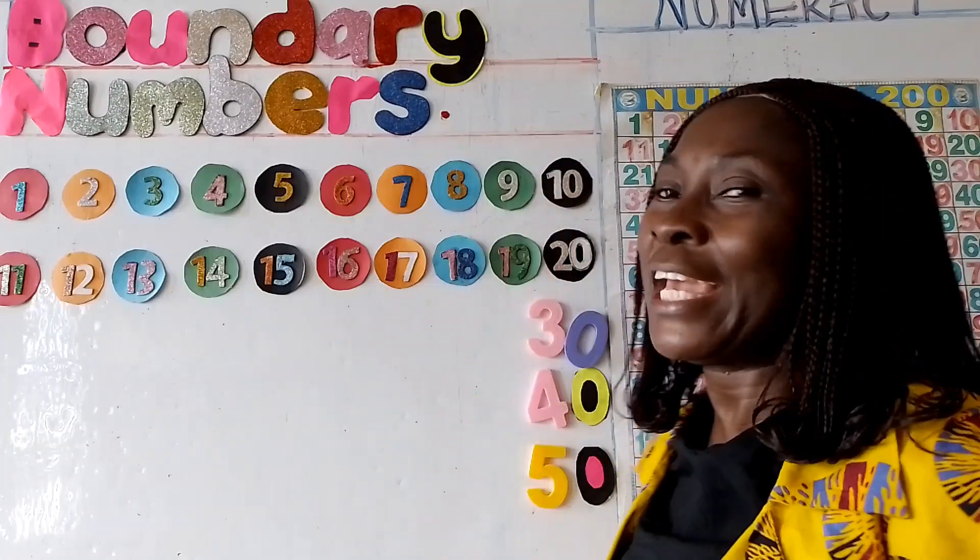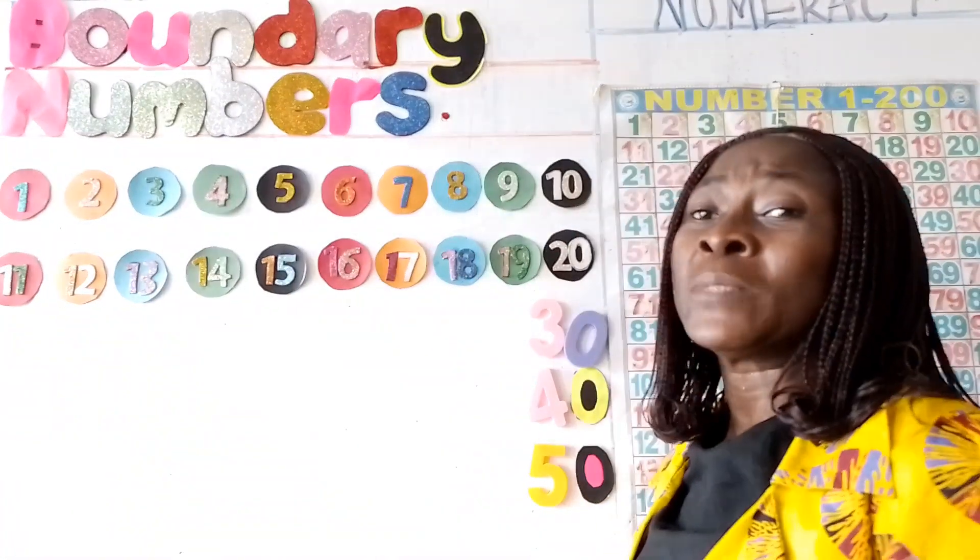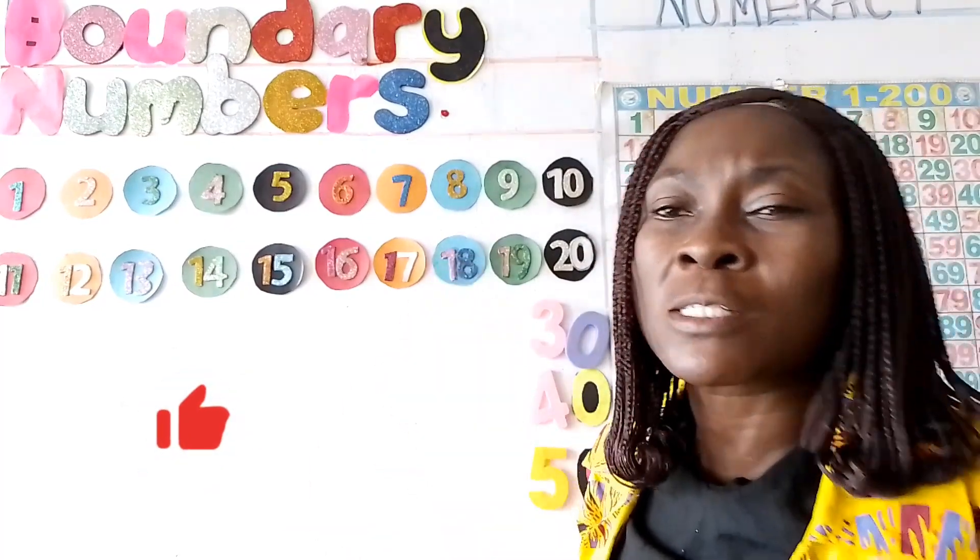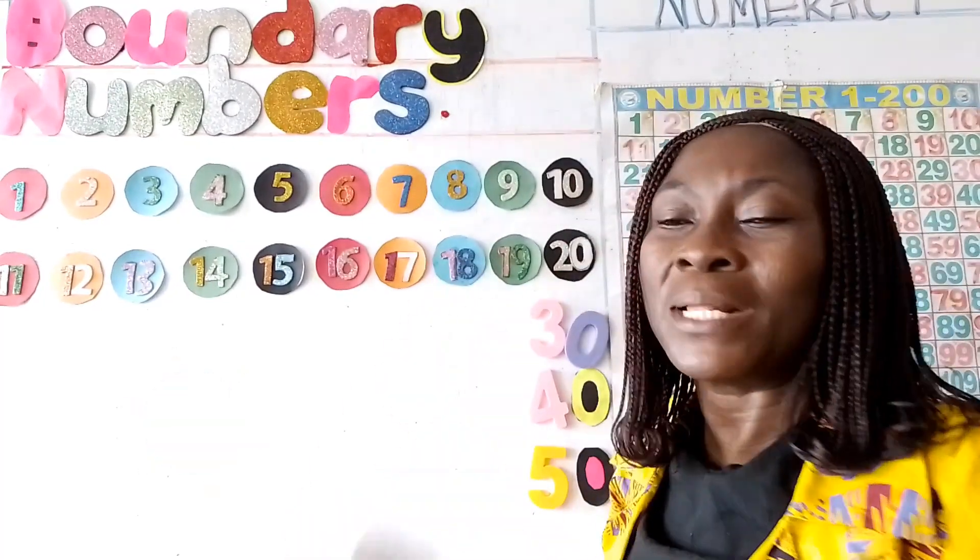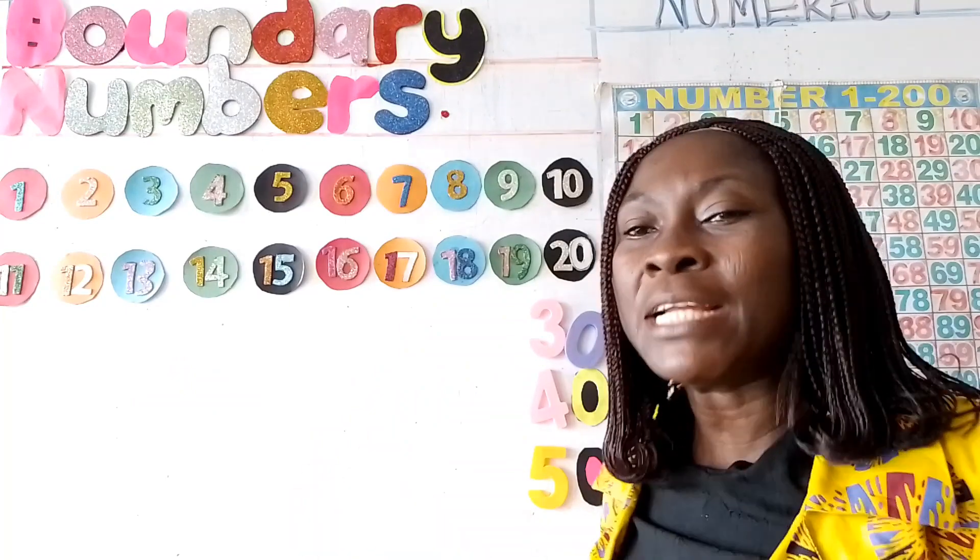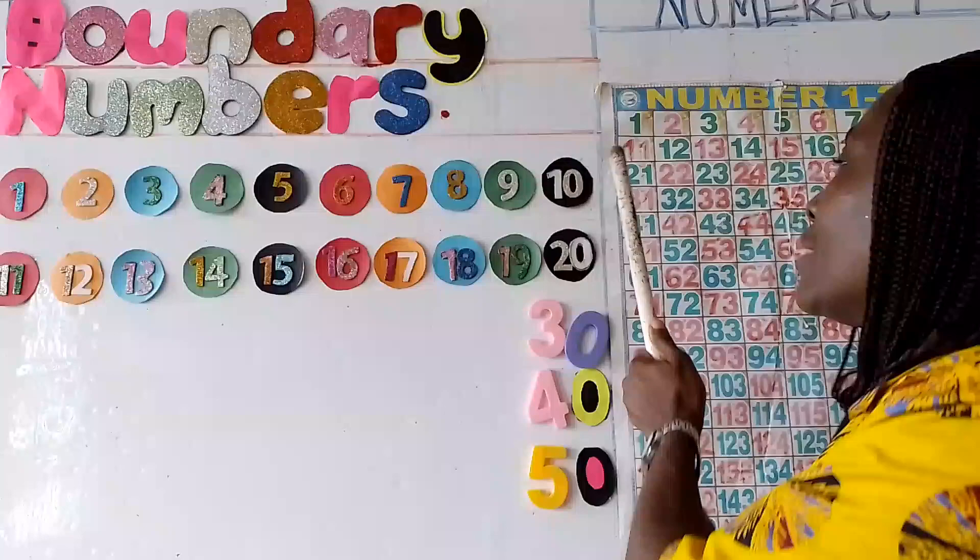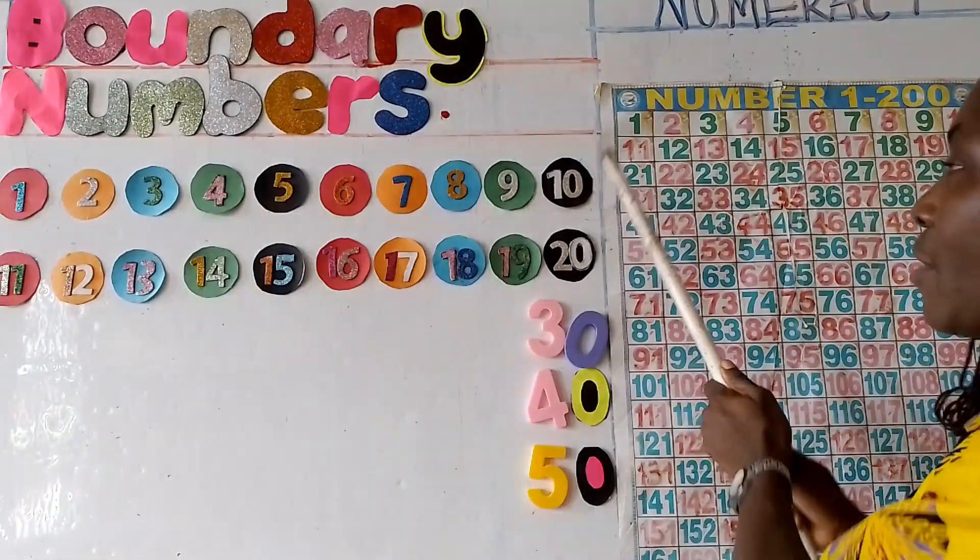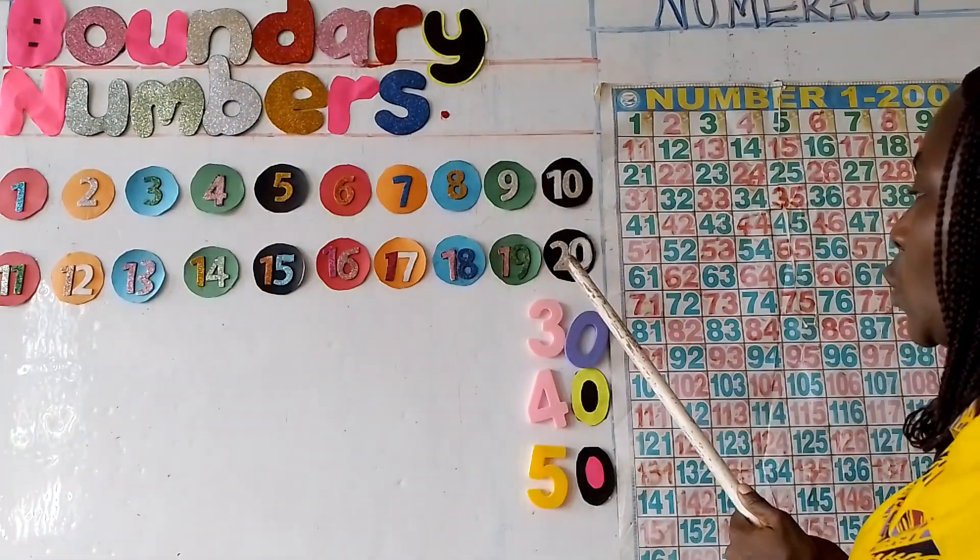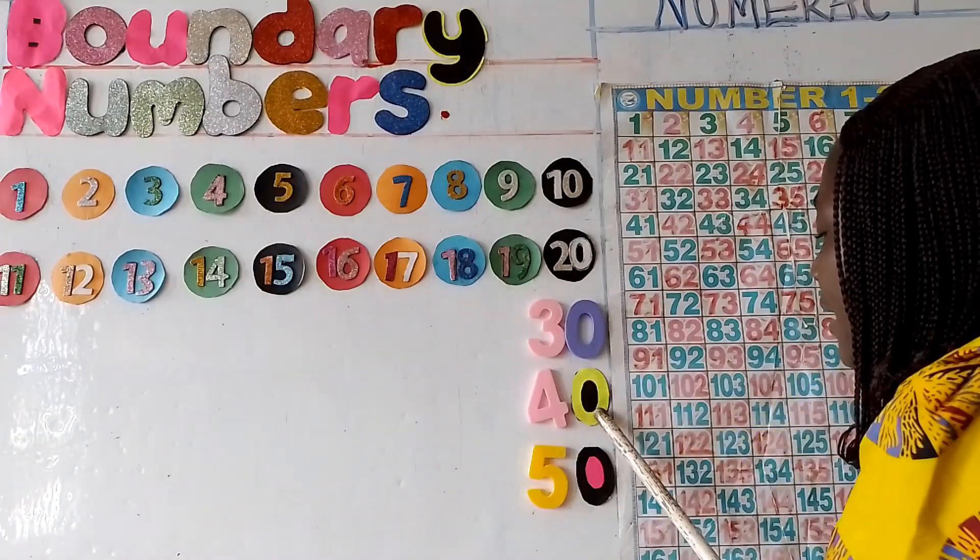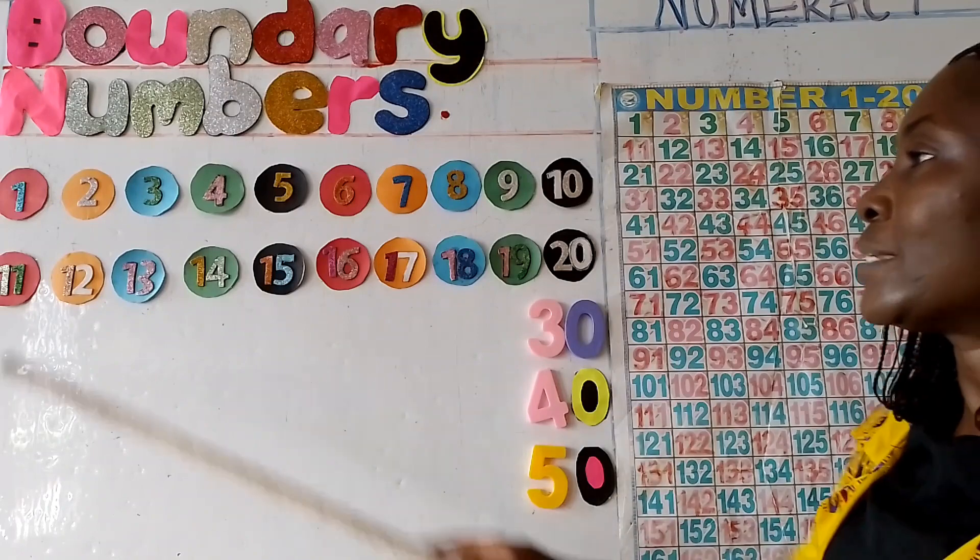Boundary numbers are numbers that fall between on the number line. If we are rounding numbers to the nearest 10, then we have the multiples of 10. For example, 10, 20, 30, 40, 50. Now let's count our numbers.